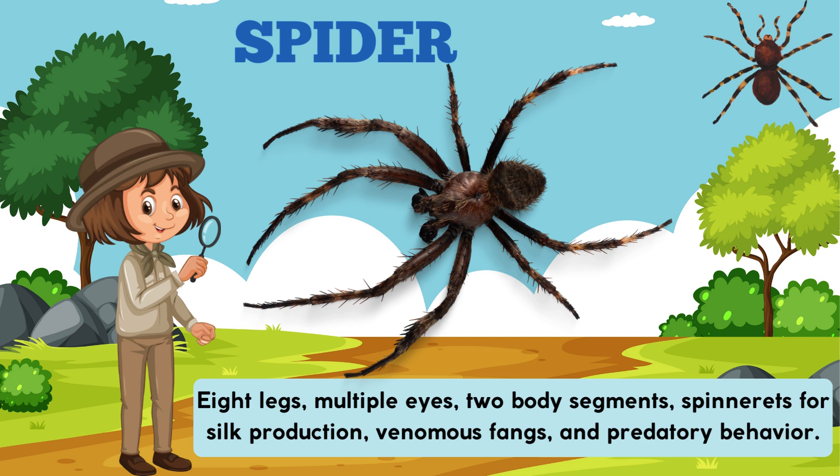Spider. Eight legs, multiple eyes, two body segments, spinnerets for silk production, venomous fangs, and predatory behaviour.